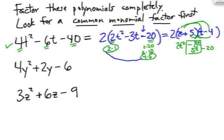So, final answer. 2 times 2t plus 5 times t minus 4. Alright, hit pause and see if you can factor the following two problems.